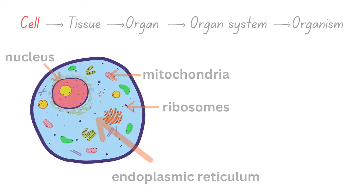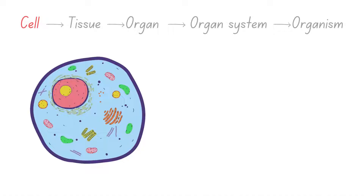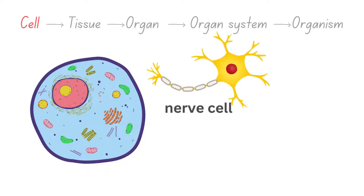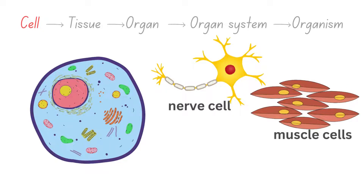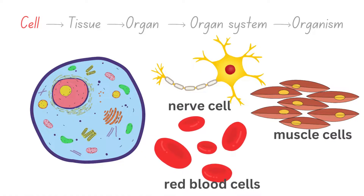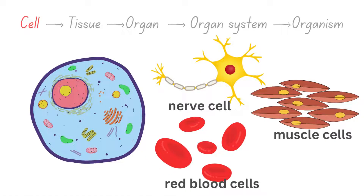Cells aren't all the same. In multicellular organisms, we see cell specialization, where cells evolve to perform specific functions. For instance, nerve cells are long and thin to efficiently transmit electrical signals, muscle cells are designed to contract and produce movement, and red blood cells are uniquely shaped to carry oxygen. This specialization allows greater efficiency and complexity in the functions that organisms can perform.